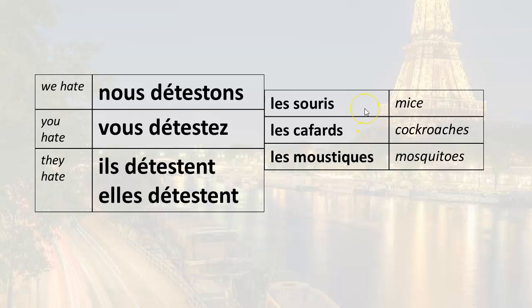They hate mice, il déteste les souris. They hate cockroaches, il déteste les cafards. They hate mosquitoes, il déteste les moustiques. They hate mice, elle déteste les souris. They hate cockroaches, il déteste les cafards. They hate mosquitoes, il déteste les moustiques.